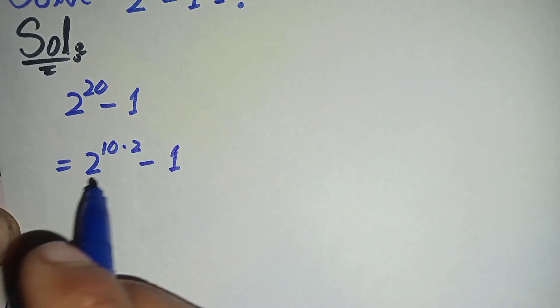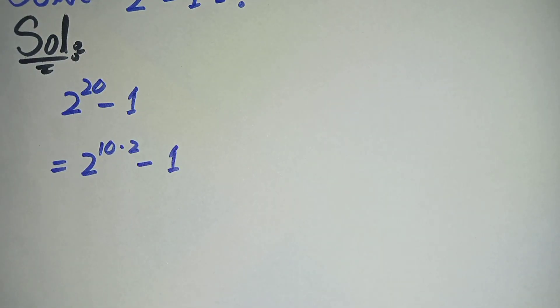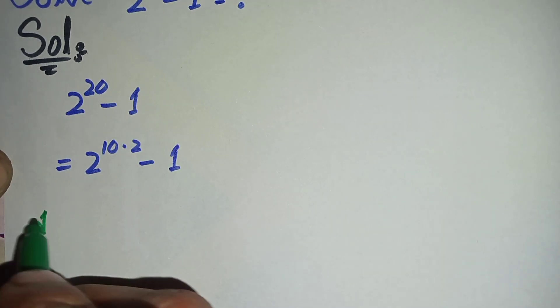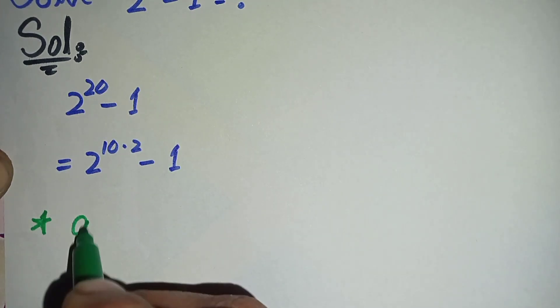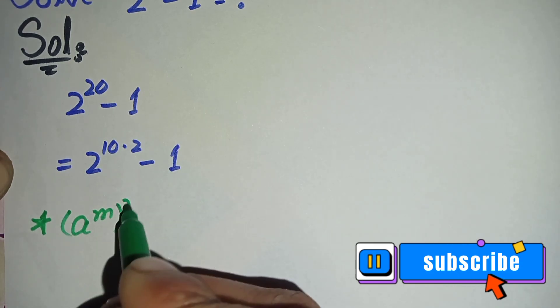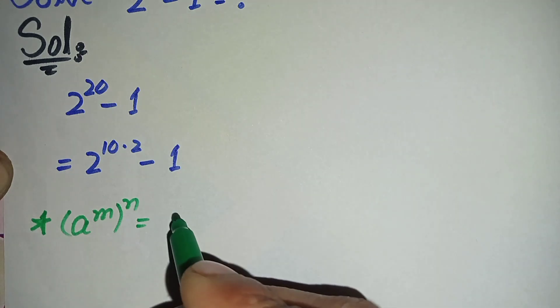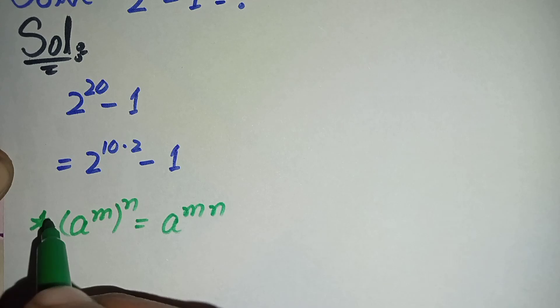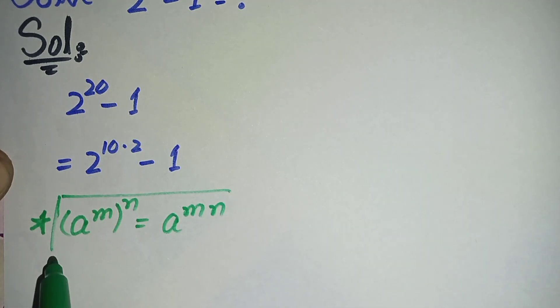Now here in this term we will use an exponentiation math property. Here we will use this property: a raised to power m, raised to power n, can also be written as a raised to power m times n.